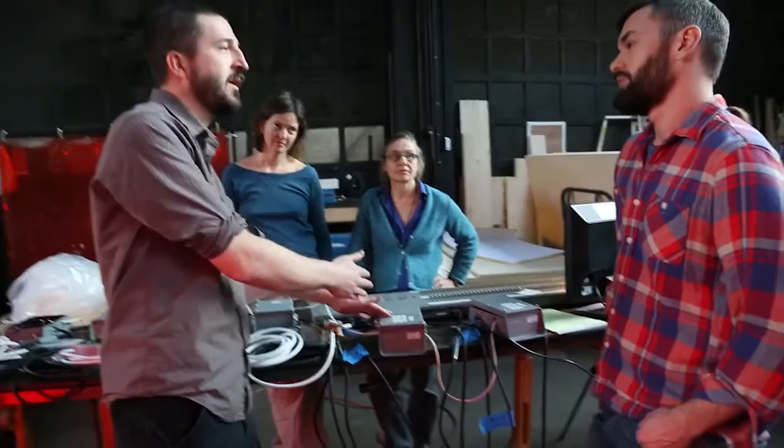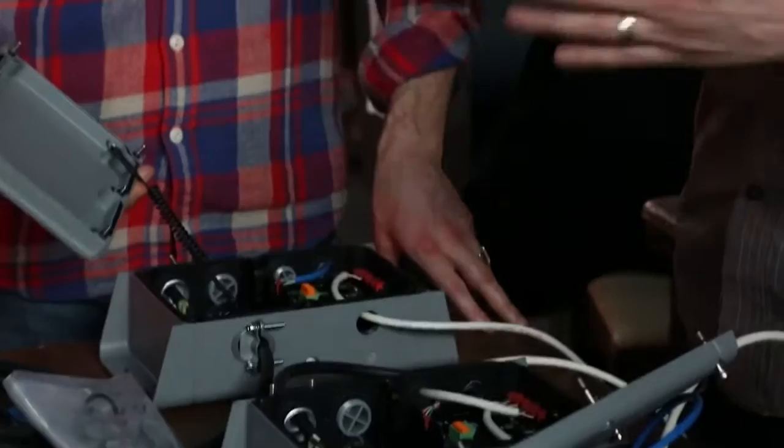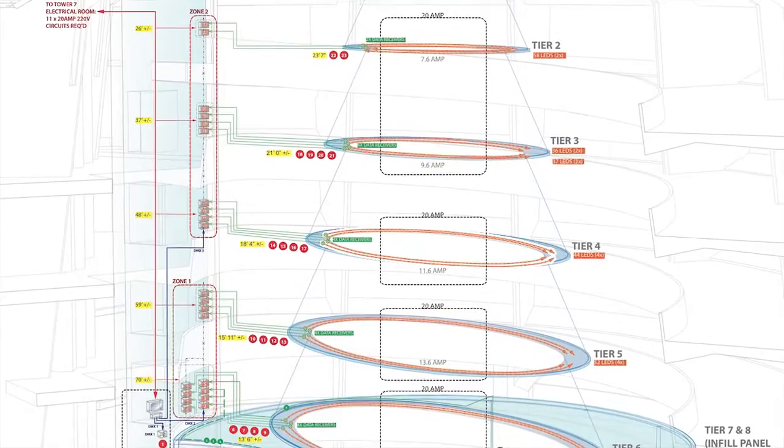So we had to figure out with the help of Philips a way that we could take these controllers and get them onto the ramps which is about 70 feet from where our lights are. We have access through one of the support columns in the museum to put the data enablers which control the system.